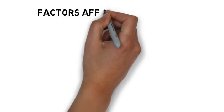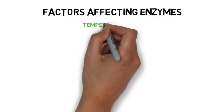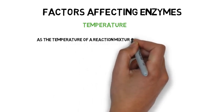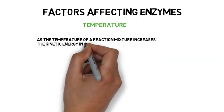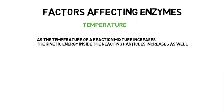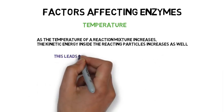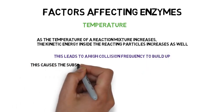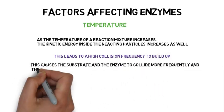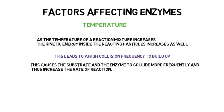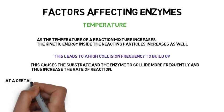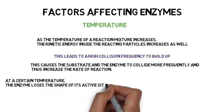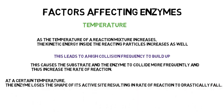Factors affecting enzymes — Temperature: as the temperature of a reaction mixture increases, the kinetic energy inside the reacting particles increases as well. This leads to a higher collision frequency. This causes the substrate and the enzyme to collide more frequently and thus increases the rate of reaction. However, at a certain temperature, the enzyme loses the shape of its active site, resulting in the rate of reaction drastically falling.